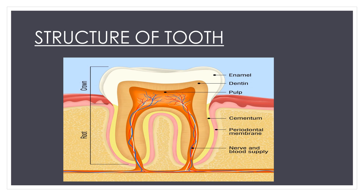What is pulp? Pulp is the softer, living inner structure of the teeth. Blood vessels and nerves run through the pulp of the teeth. The innermost part is the cementum — a layer of connective tissue that binds the tooth firmly to the gums and jawbone.